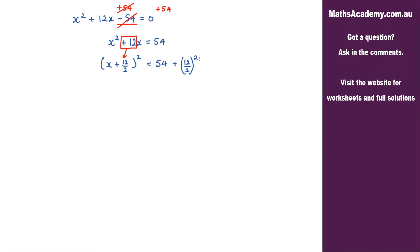Now we can tidy things up a little bit here. I've got x plus 12 divided by 2 is 6. That is squared, is equal to 54 plus 12 divided by 2 is 6 and 6 squared is 36. So we've got (x + 6)² is equal to 54 plus 36 is equal to 90.